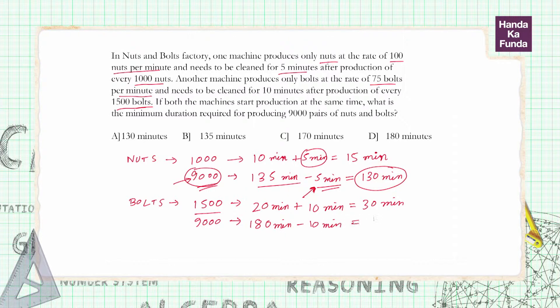Now what will be our answer - will it be 130, will it be 170? We are required to find out the minimum duration required for producing 9000 pairs of nuts and bolts.